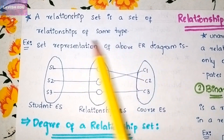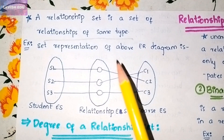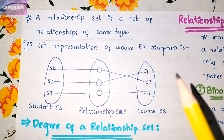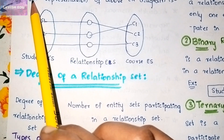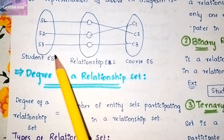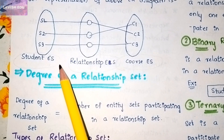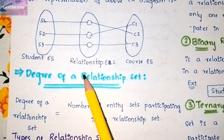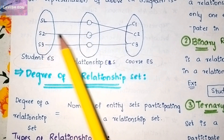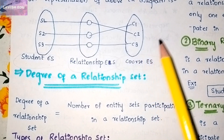A relationship set is a set of relations of the same type. A relation can be formed between n number of entity sets. In the ER diagram example, we have a student entity set, a relationship entity set, and a course entity set. S1, S2, and S3 are students — S2 has a relation with C1 (Course 1), S1 has a relation with Course 2, and S3 has a relation with Course 3.